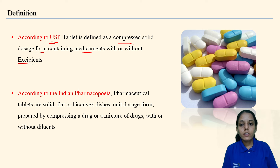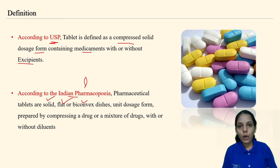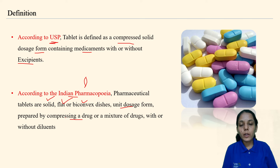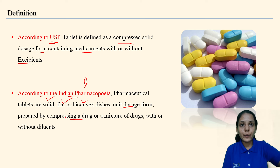According to the Indian Pharmacopoeia (IP), pharmaceutical tablets are solid, flat or biconvex — biconvex means they will have some bulging surface on both sides. They are unit dosage forms prepared by compressing a drug or a mixture of drugs with or without diluents. Depending on the dose, if the dose is sufficient, the tablet may not require the diluent.